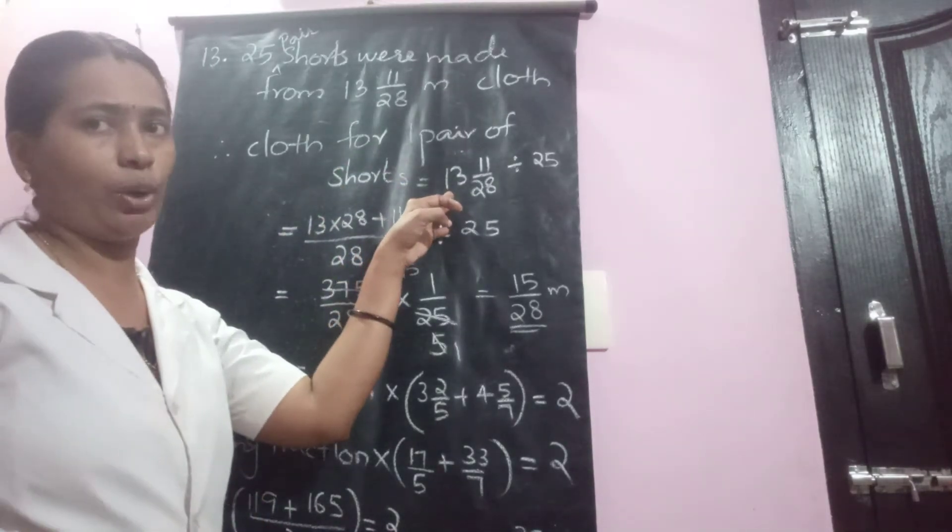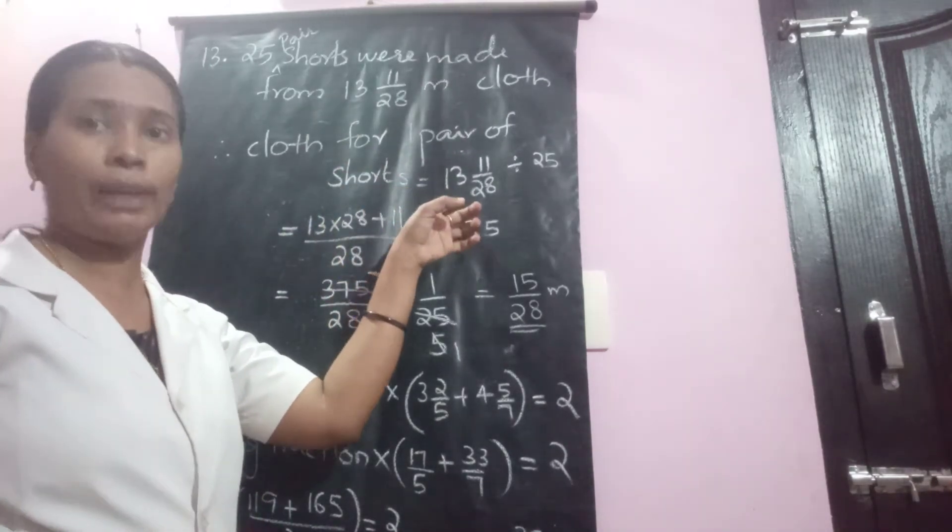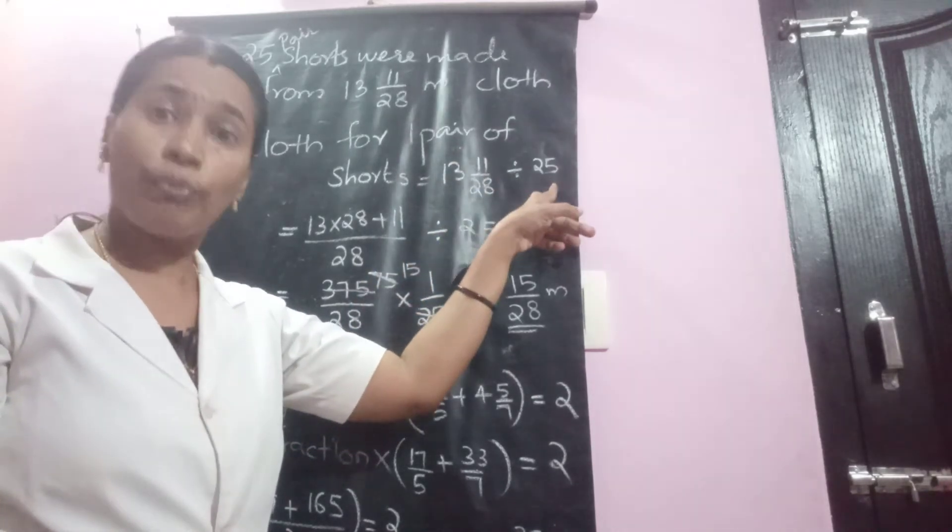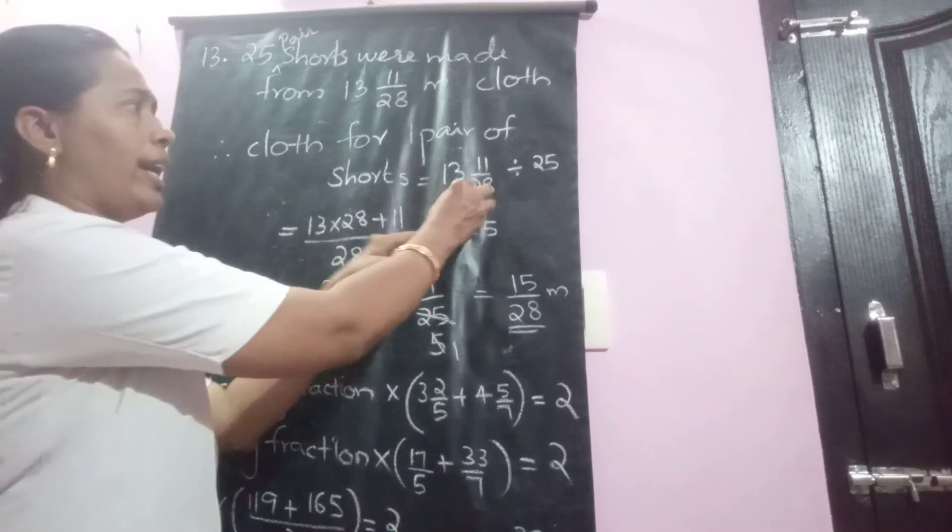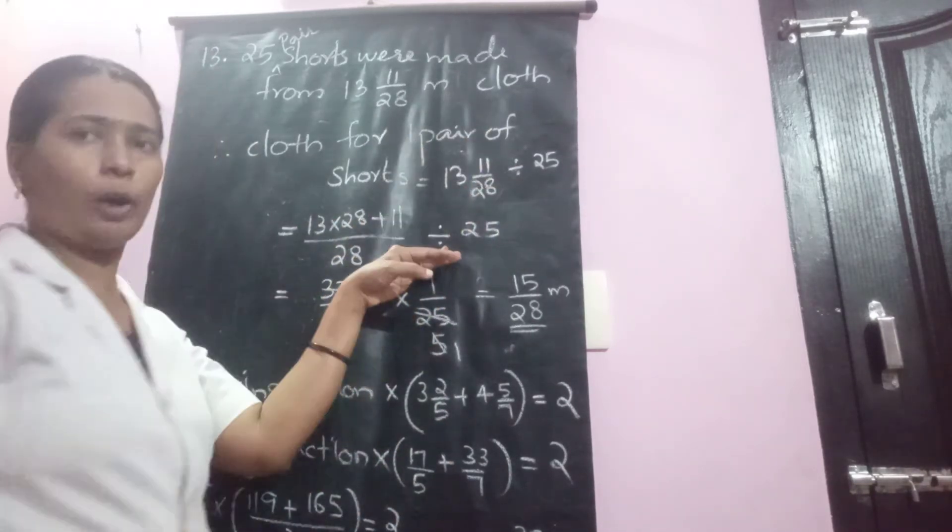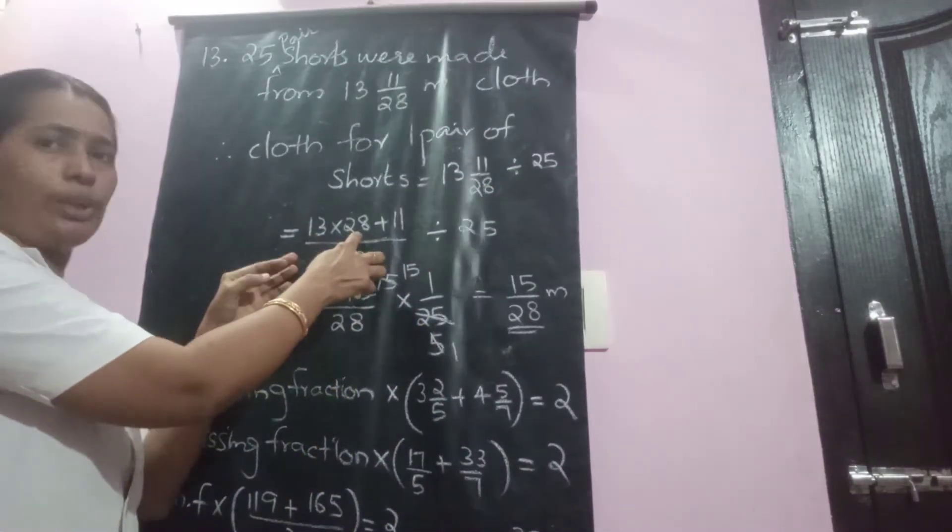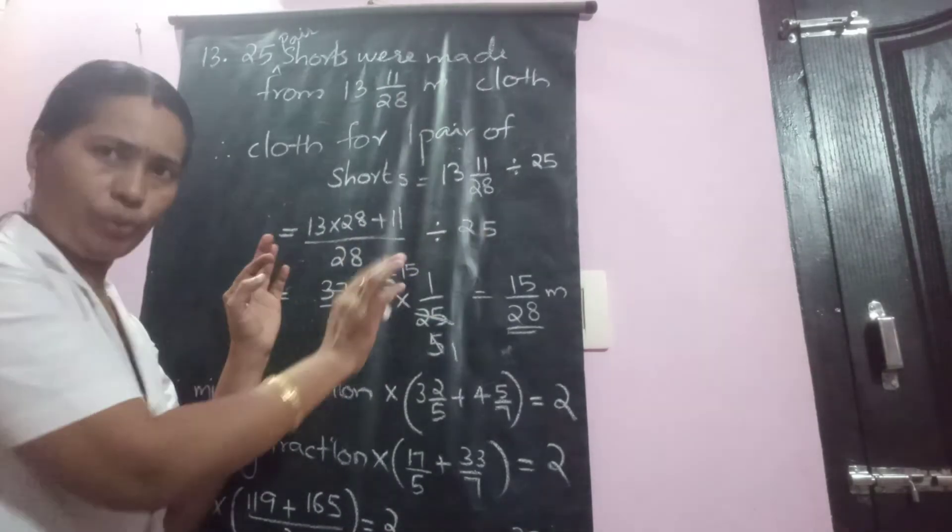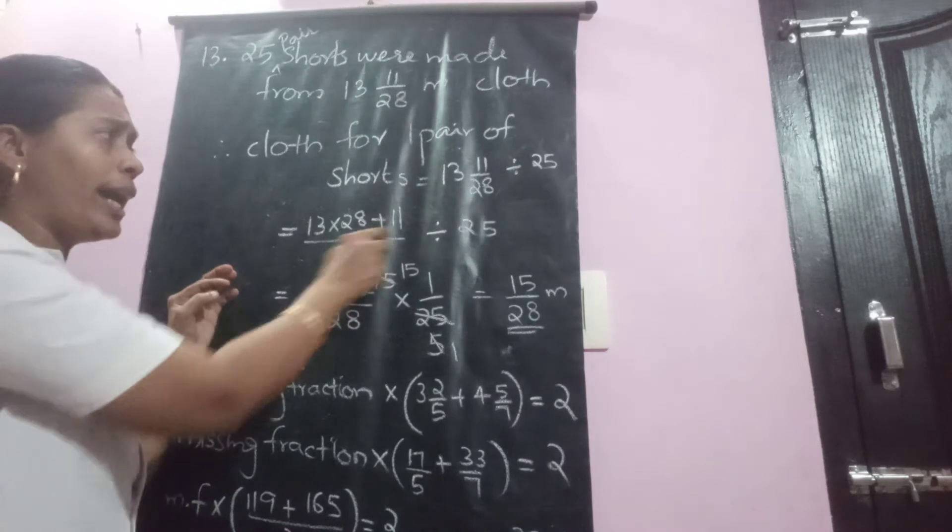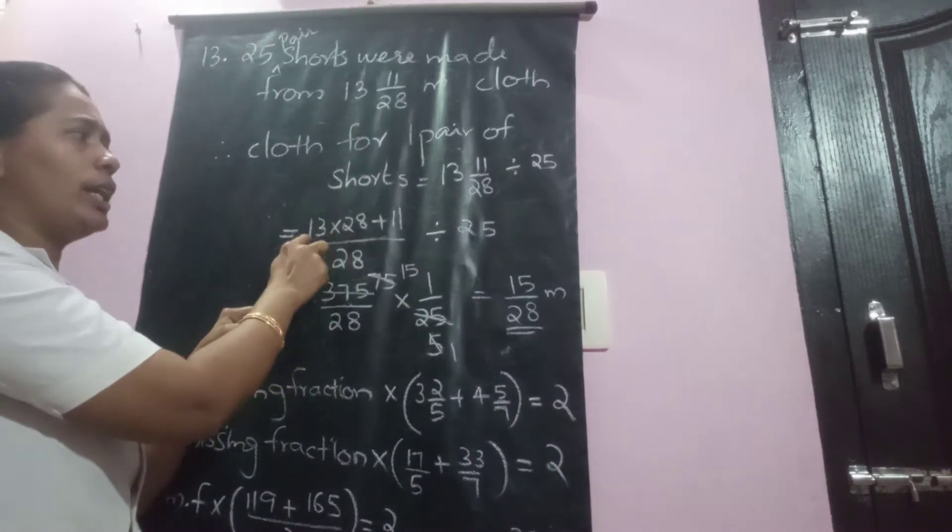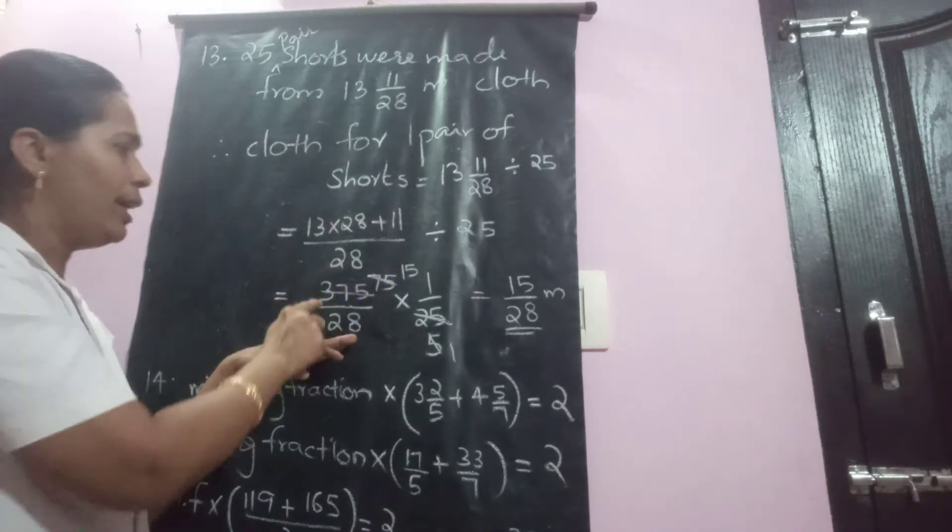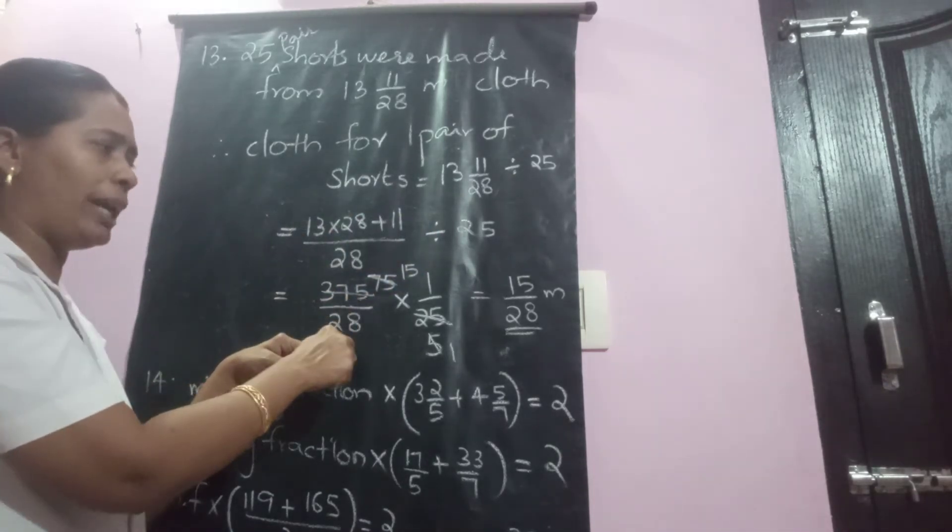The total length of clothes is given in terms of mixed expression: 13 and 11/28 divided by 25. So we can write this one as improper. How to write improper? 13 times 28 plus 11 by 28 divided by 25 itself. First you add group 1. So it will give you 13 times 28 plus 11 will give you 364 plus 11, that is 375 by 28.